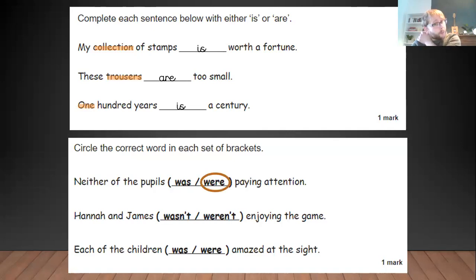Okay. So the first one: neither of the pupils were paying attention. There's more than one pupil, so it's were. If it's plural it is were. If it's singular it is was. Hannah and James weren't enjoying the game. Hannah and James, two of them. More than one means it's plural. So we have to go with the were not the was, in this case weren't.